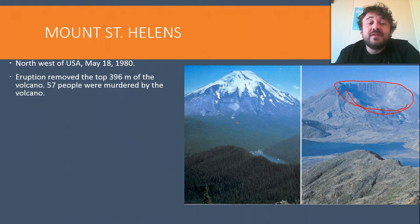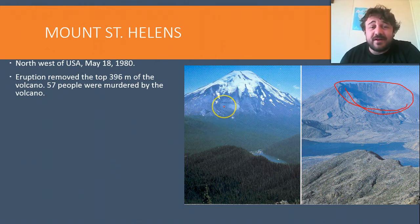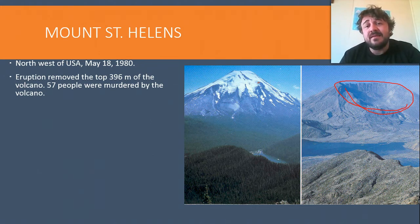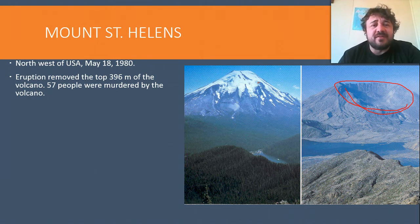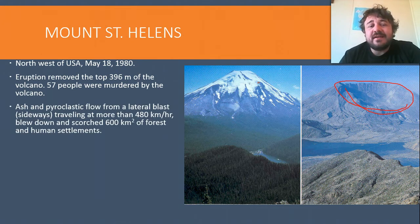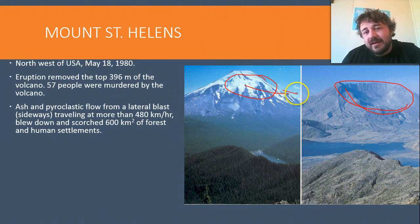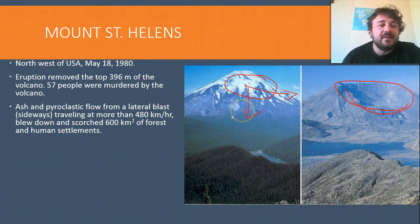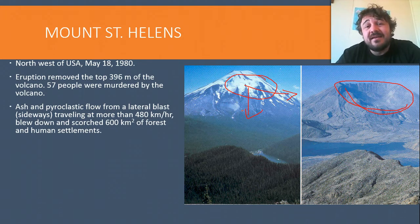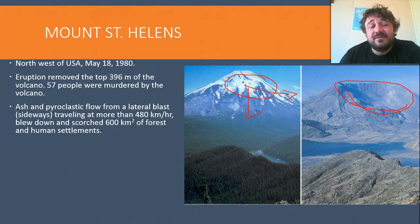An eruption removed the top 400 meters of this mountain. 57 people died - some due to not being prepared to leave, some were caught by surprise. Ash and pyroclastic flow from a lateral blast - not going up but going sideways and actually downward - traveled at more than 480 kilometers per hour. This explosion blew the side of the mountain off at about 480 kilometers per hour.